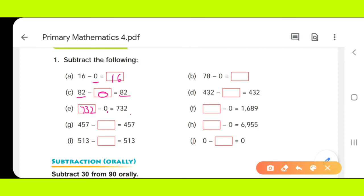457 minus dash is equal to 457. So, value is the same on the left-hand side and right-hand side. It means that you have not done anything. That means 0. 513 minus dash is equal to 513. It means that value is the same on both sides. So, you have not done anything.